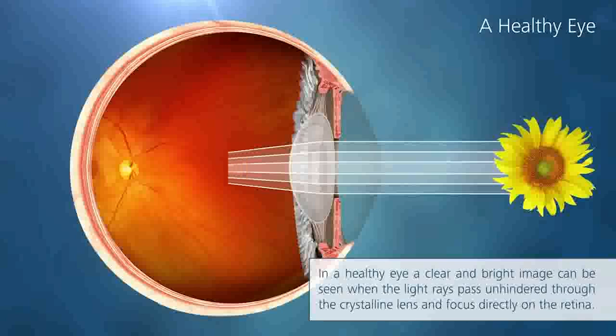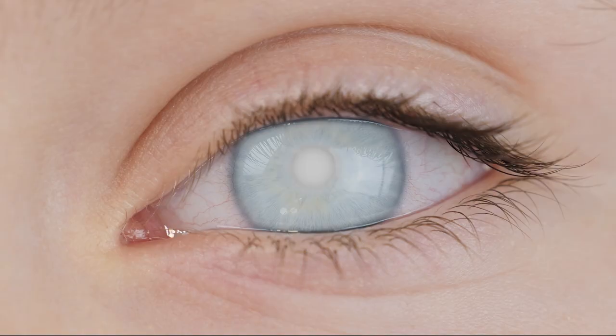Typically, the natural lens we are born with is clear, but it becomes cloudy as we age. This cloudy lens is what we call a cataract.